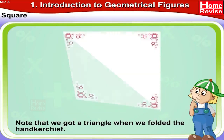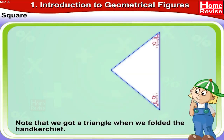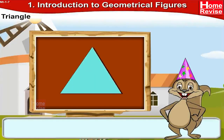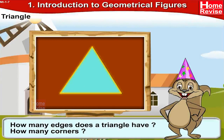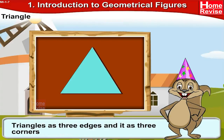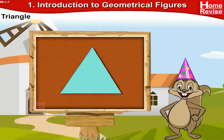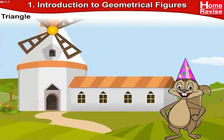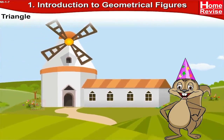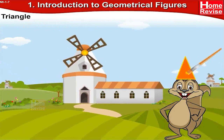Now fold the handkerchief and note that we get a triangle when we fold it. How many edges does a triangle have? How many corners? A triangle has three edges and three corners. Find this shape in your surroundings — for example, the birthday cap.